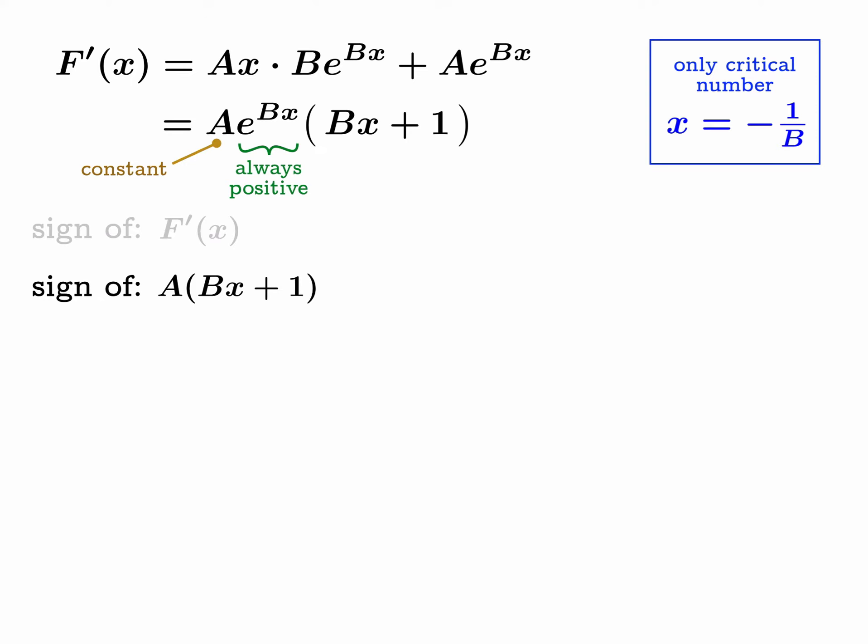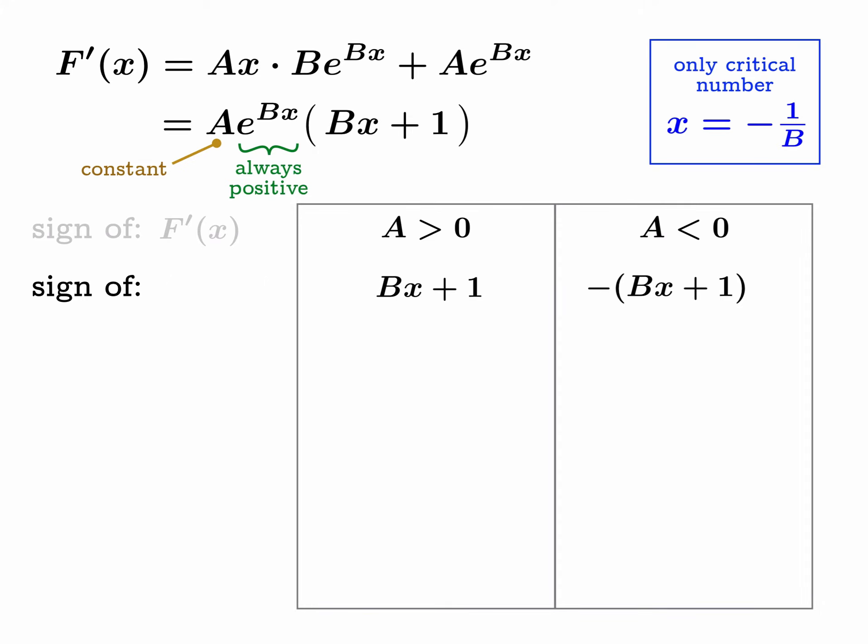This suggests we should break up our analysis into two cases: either A is positive, in which case we'd be looking at the sign of Bx + 1, or A is negative and we'd be looking at the sign of the opposite of Bx + 1. So our analysis will break into two cases, whether A is greater than or less than zero.